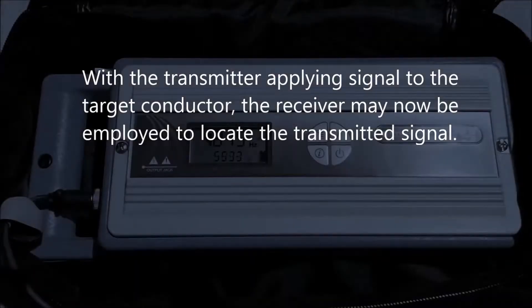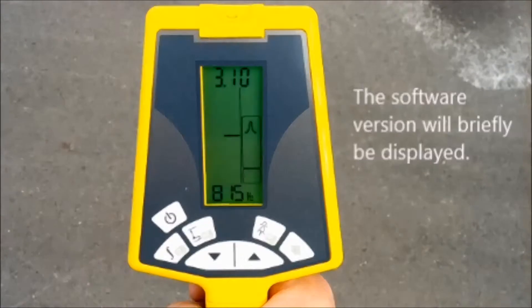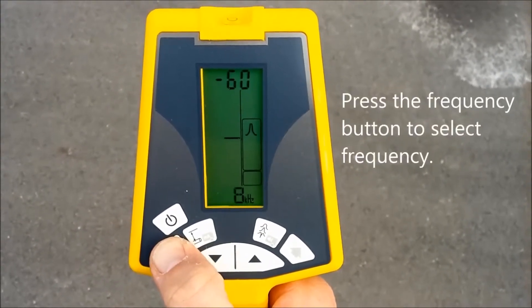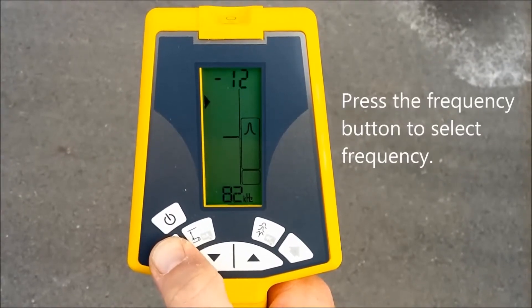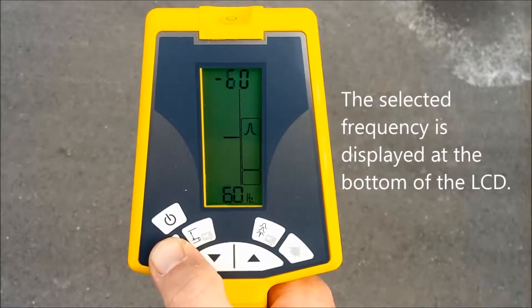Now that the transmitter has applied a signal to the target conductor, we may use the receiver to locate the path of the utility. Turn the receiver on. The software version will briefly be displayed at the top of the LCD. Press the frequency button to select the desired frequency. The selected frequency is displayed at the bottom of the LCD.